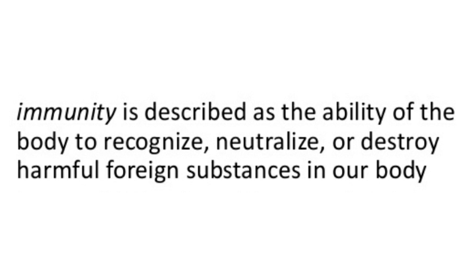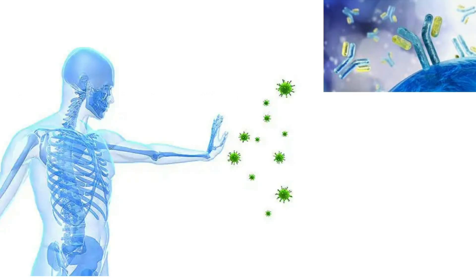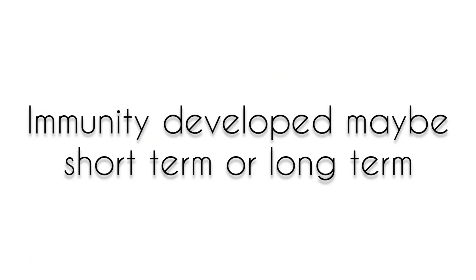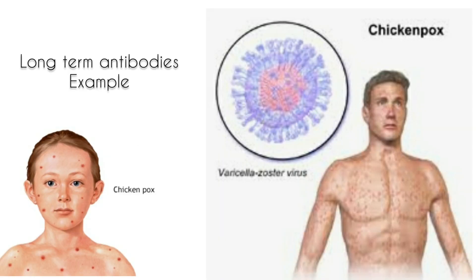Once you are exposed to a particular microorganism, you will develop enough antibodies so that the second time the same microorganism enters, you will already have antibodies inside you to fight the infection. This type of immunity provided by a person's body towards a particular disease may be short-term or it may be permanent. The antibodies developed against certain infections remain in the blood for a long period of time, and therefore on second exposure, the antibodies are ready to fight.